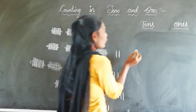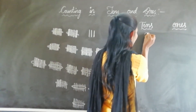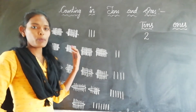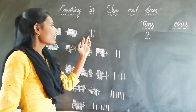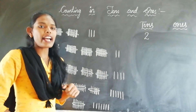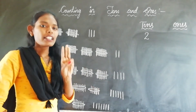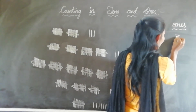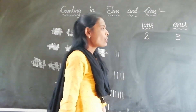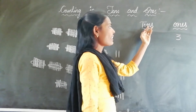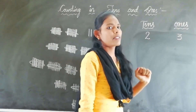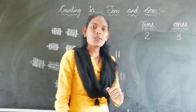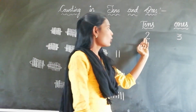How many tens? 2 tens. And tell me students, how many 1s? Here we have 3 loose sticks, that means here we have 3 ones. So 2 tens and 3 ones. So the number is 23.